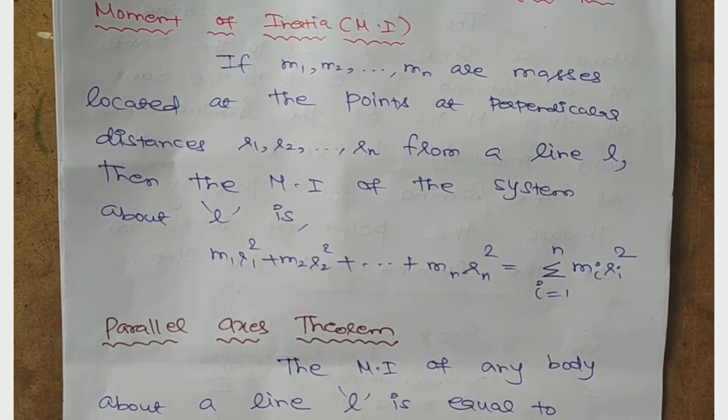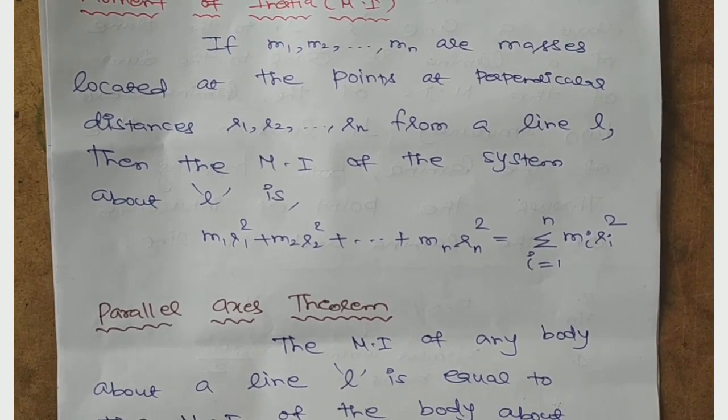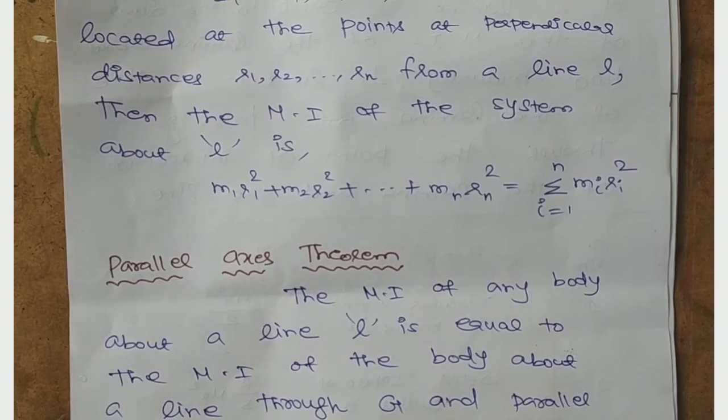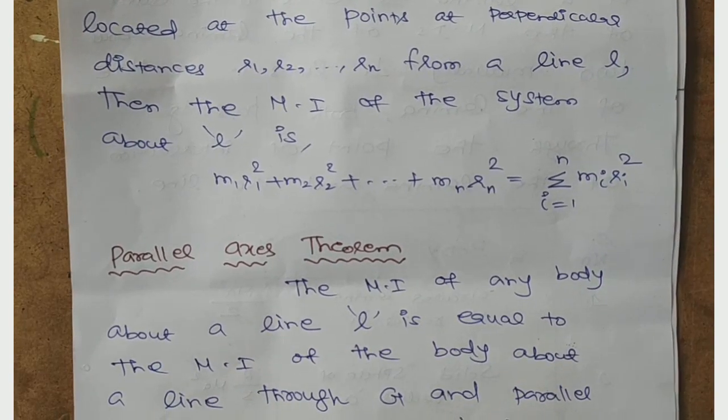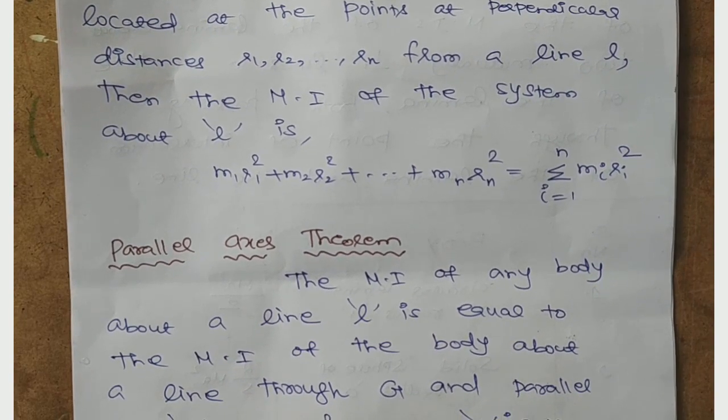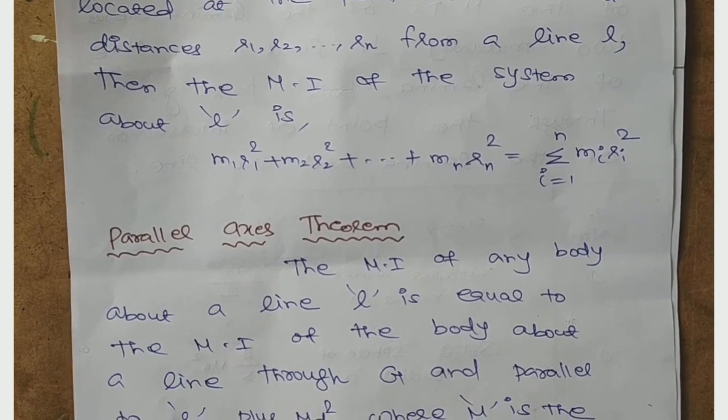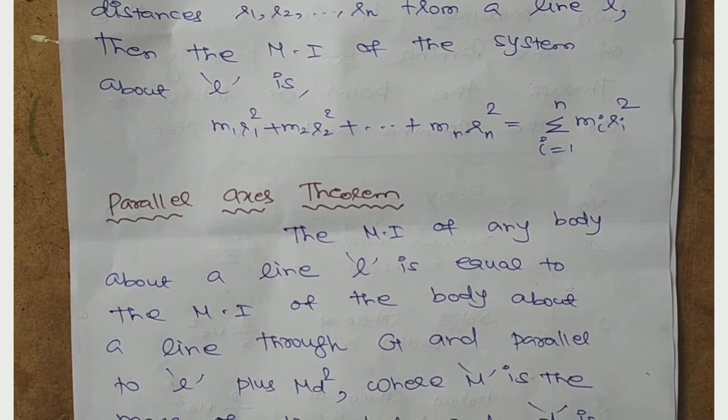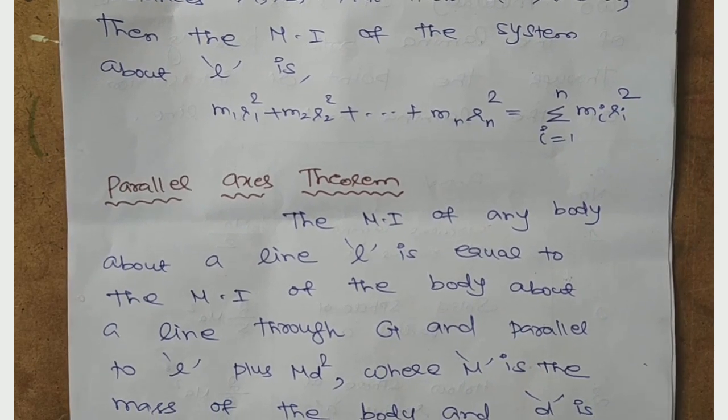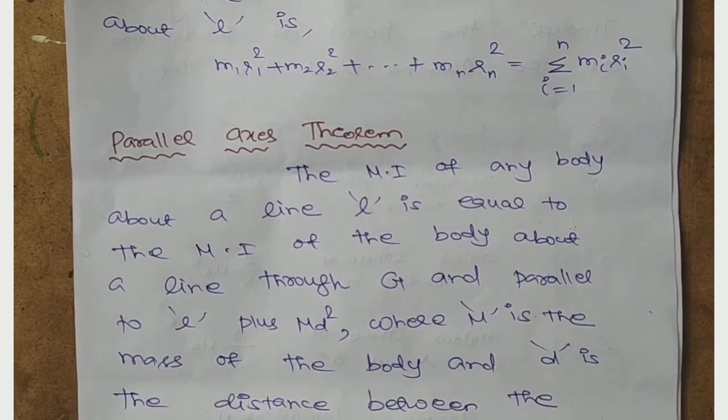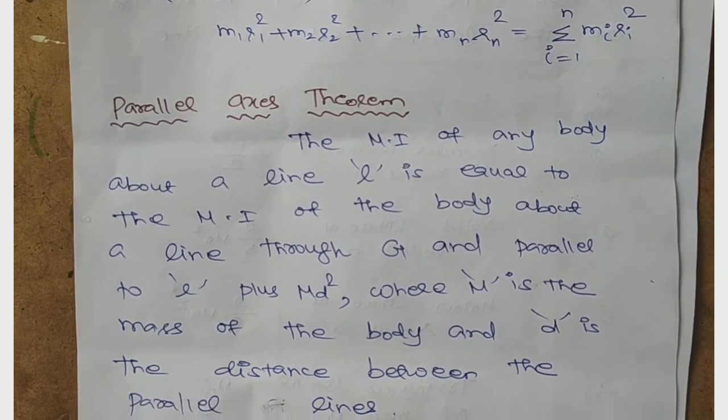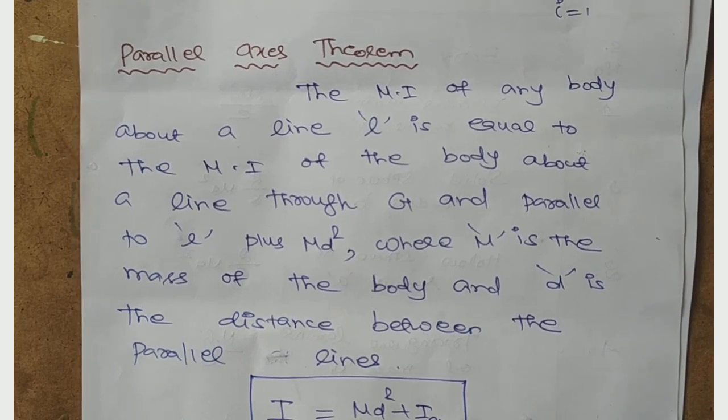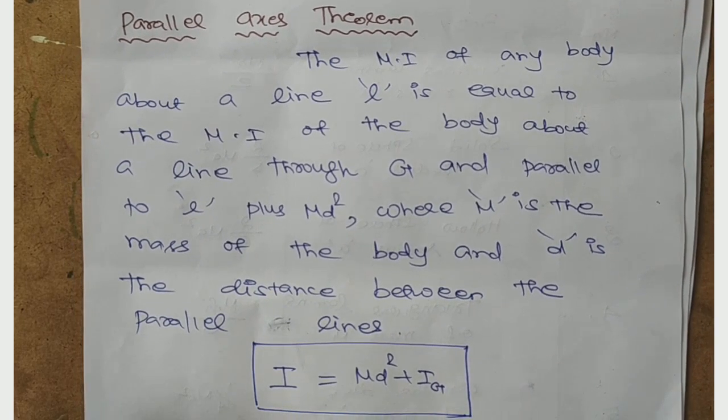Next, a parallel axis theorem. The moment of inertia of any body about a line L is equal to the moment of inertia of the body about a line through G and parallel to L, plus Md². Where M is the mass of the body, d is the distance between parallel lines. The formula is parallel axis theorem: I equal to Md² plus Ig.